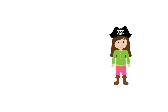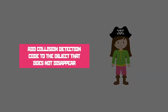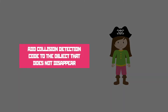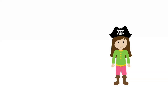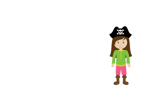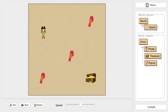The trick with this is to always make sure that you add the collision detection code to the object that does not disappear. This makes some sort of sense — we wouldn't put all the instructions for what to do during a collision on the thing that's going to vanish. In our case it's our pirate who's not disappearing.